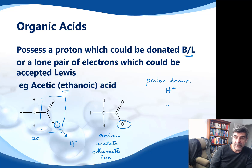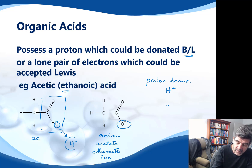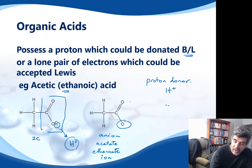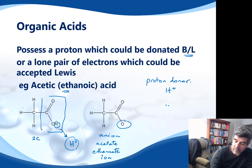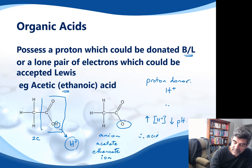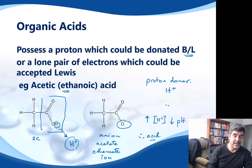With an increase in the H+ concentration — or at least the hydronium concentration — in a solution, and knowing the polarity of this molecule means it will be miscible with water, we would expect an increase in the concentration of H+ ions and therefore a decrease in pH. So therefore, we would have an acid solution. That's probably the easiest of these to analyze in terms of its acidic or basic nature.